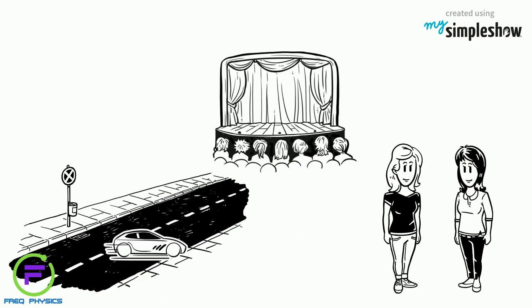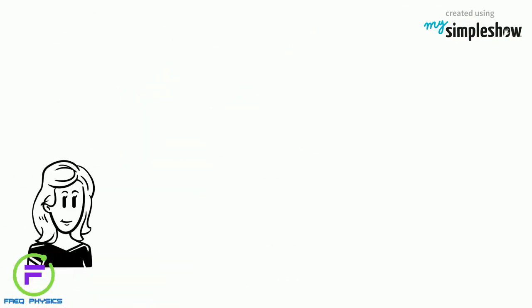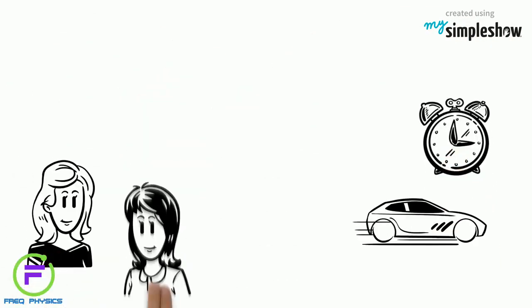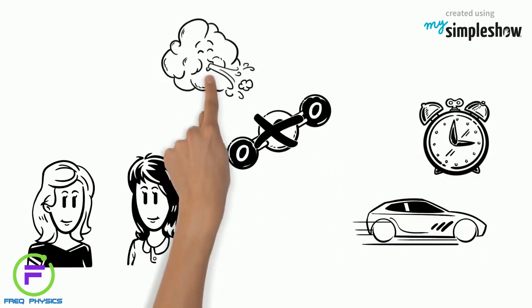Liz offers to drive, but Sylvia suggests that they ride their bikes instead. Liz argues that it will be quicker to drive, but Sylvia tells her she's trying to cut back on the amount of greenhouse gases she releases into the air.